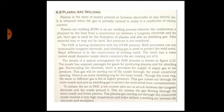Plasma arc welding. We know that plasma is the state of matter present between electrodes in any electric arc. It is obtained when the gas is partially ionized to make it a conductor of electric current. Plasma arc welding is an arc welding process where coalescence is obtained by the heat from a constricted arc between a tungsten electrode and the workpiece.